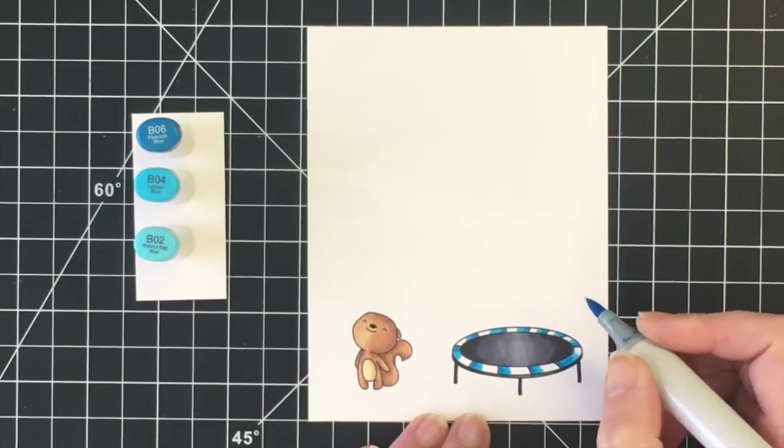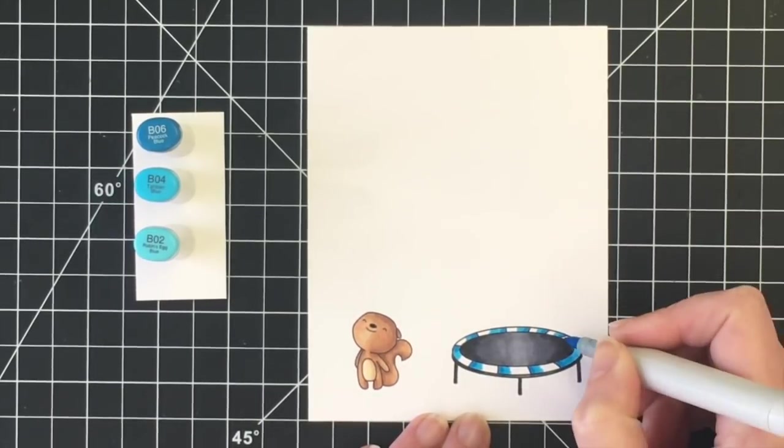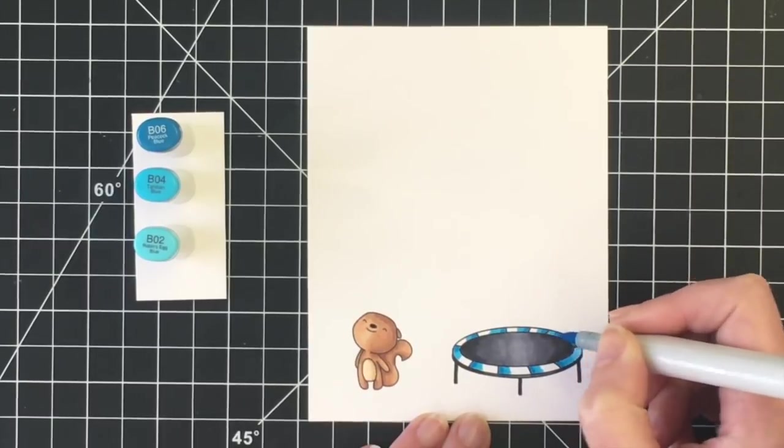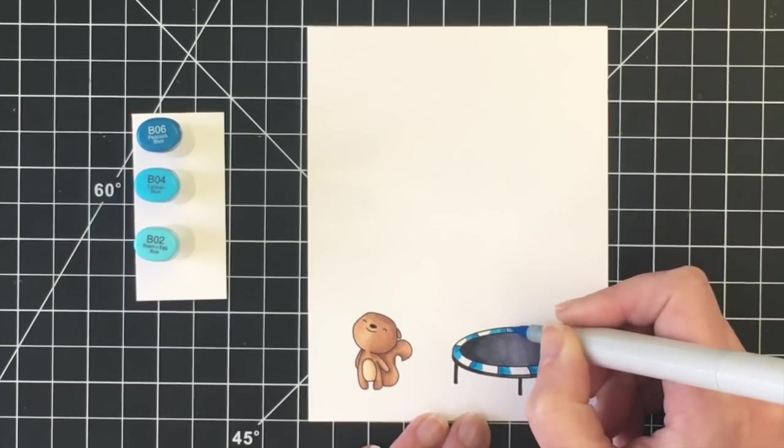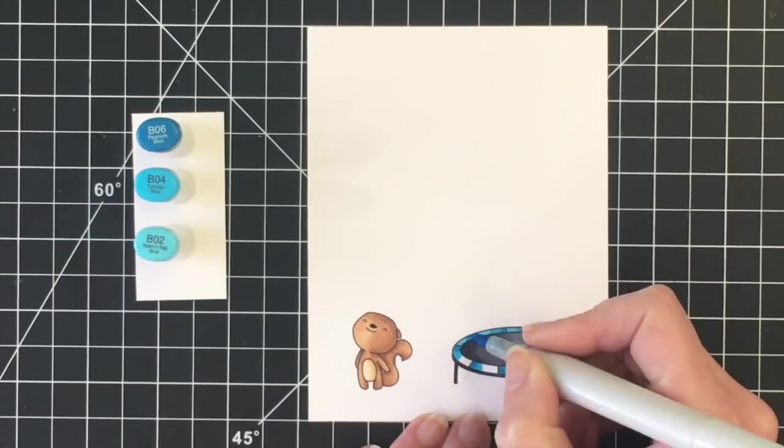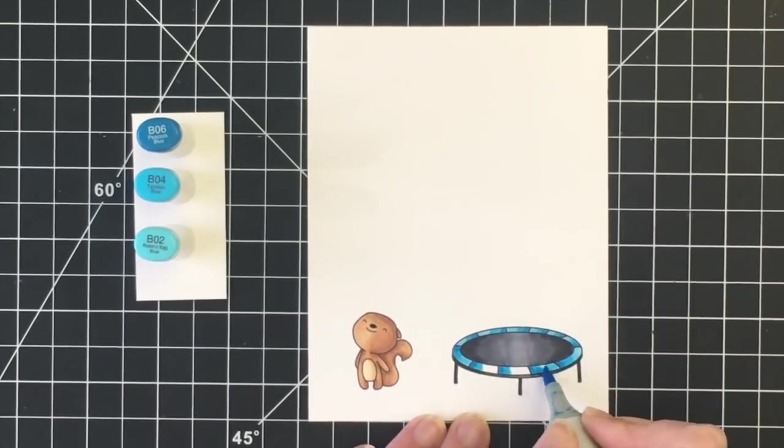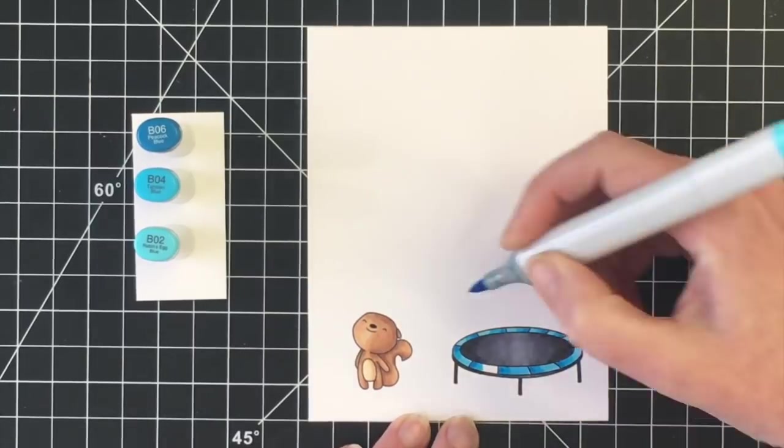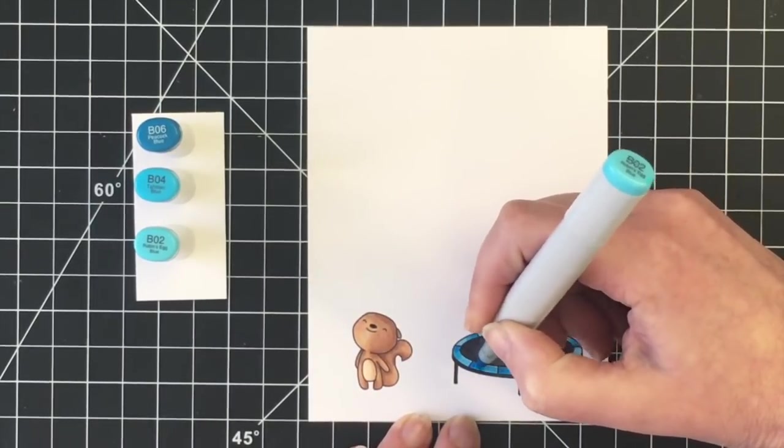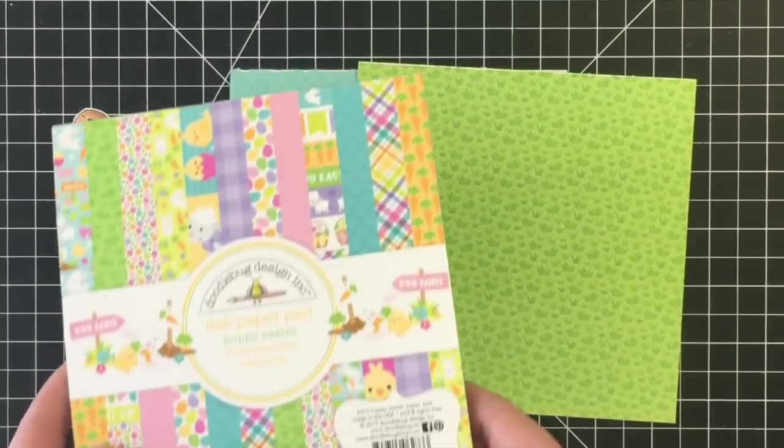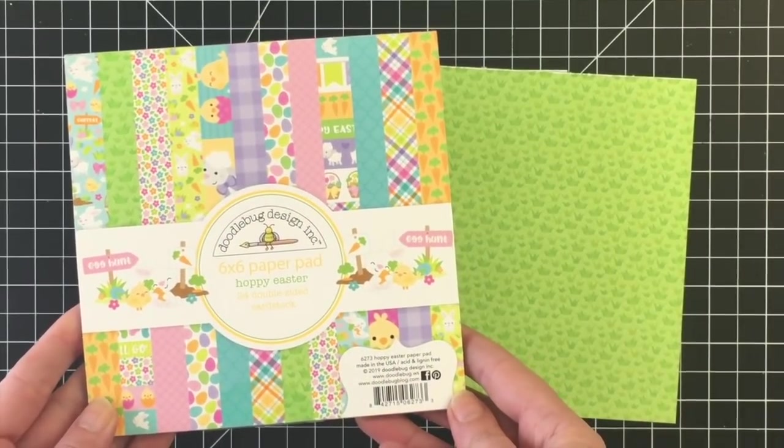And to finish that off, I used the B02. So this just gives it a bit of a bright blue color. And like I said, I thought it would pop on the green grass paper that I'm going to use and also is a good complimentary color with the brown of the squirrel.